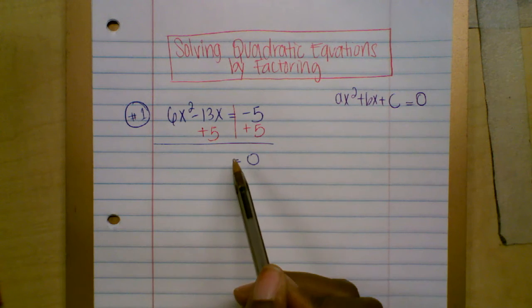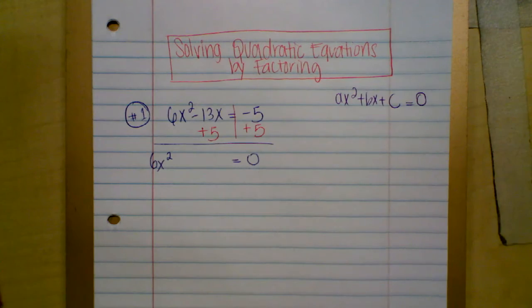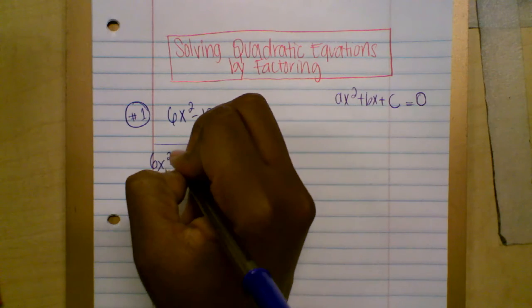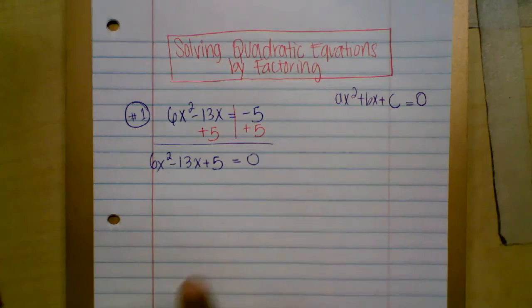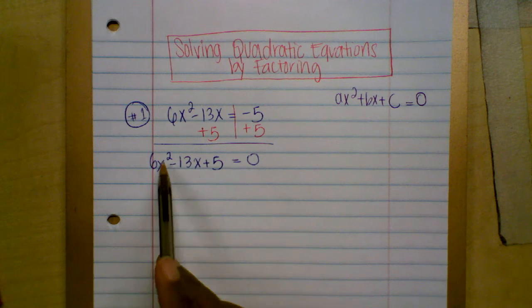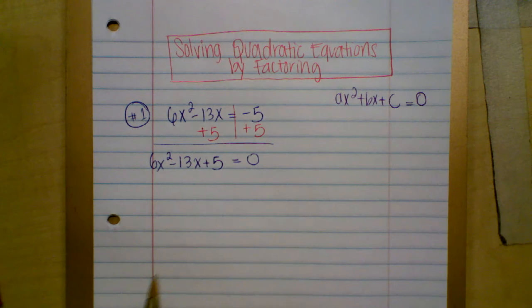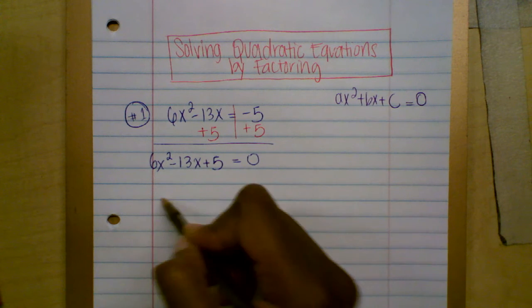So I'm going to put everything in standard form, starting with the term with the highest exponent, which is 6x squared, then negative 13x, and the constant, which is plus five. Step one is done — we wrote the equation in standard form. Now step two: factor the left side using either the box method or by grouping. Before doing that, you need to rewrite this equation using four terms.